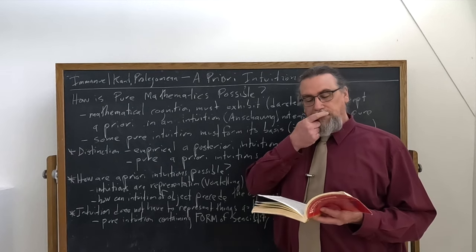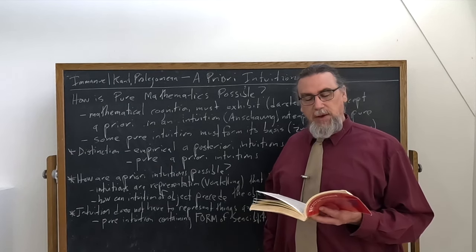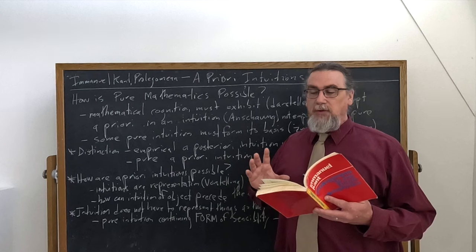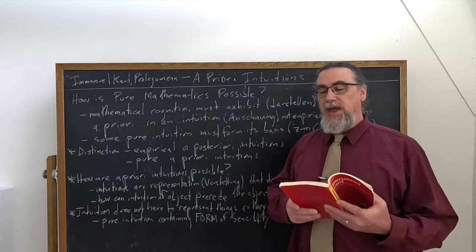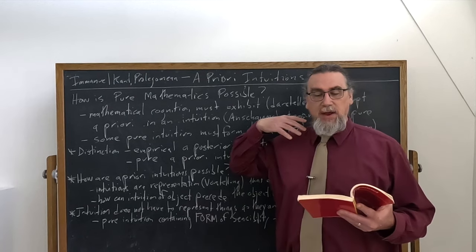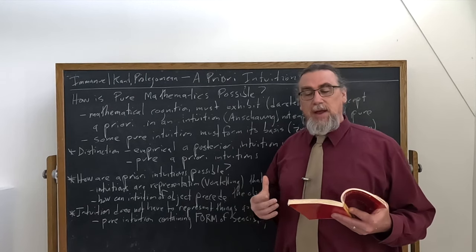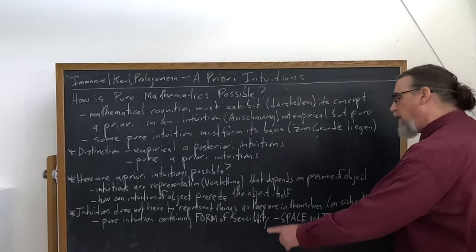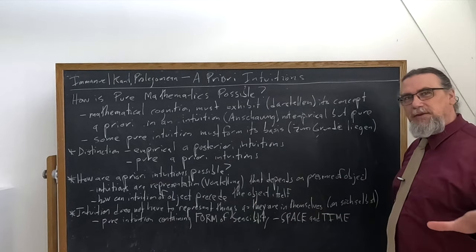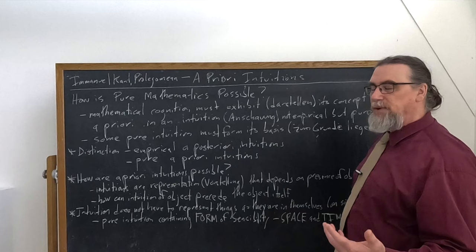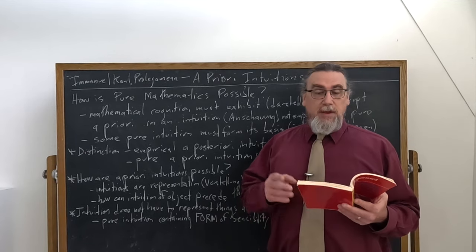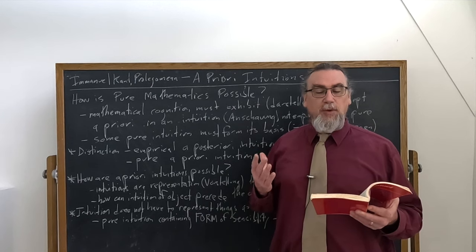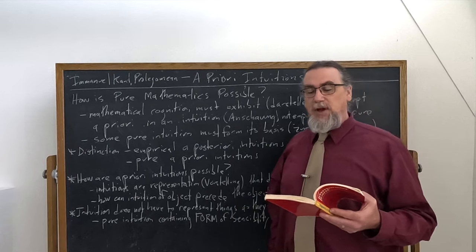And Kant goes on and he says, okay, what is an intuition? An intuition is a representation, a Vorstellung. So now we've got our other Stellung. And Stellung means to place in something, to constitute. So Vorstellung, representations, they could be images, they could be various other kinds of ideas. Vorstellung that depends on the presence of the object. Now the object is the Gegenstand. And the presence of the object is the Gegenwart of the Gegenstand. So the being there, the being in existence.